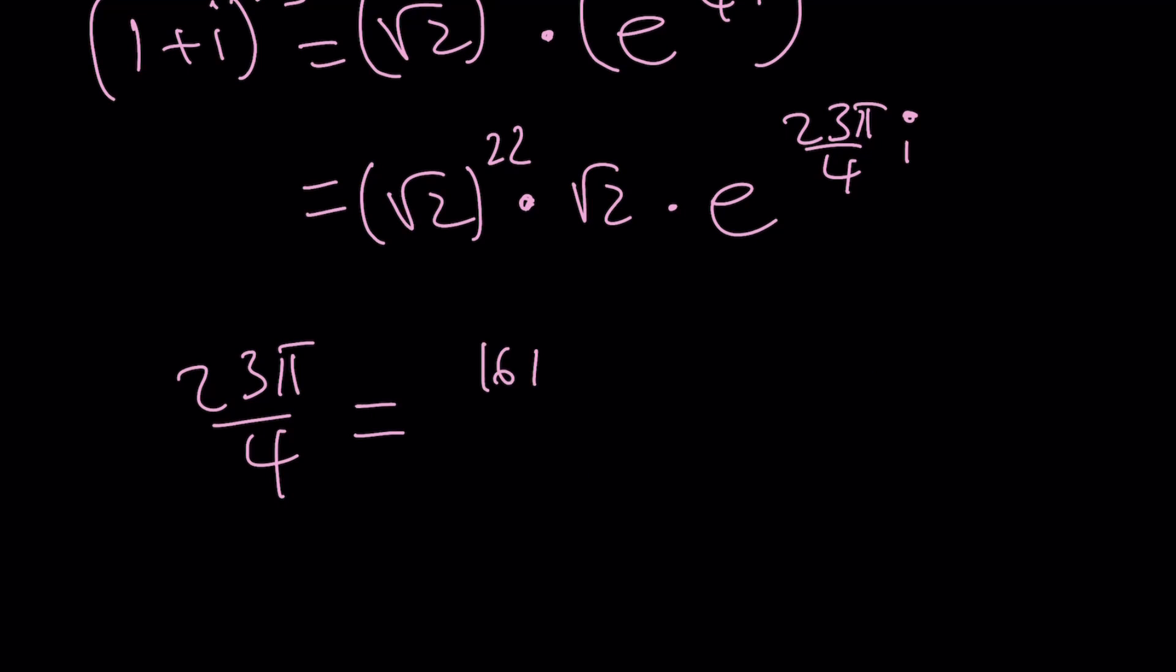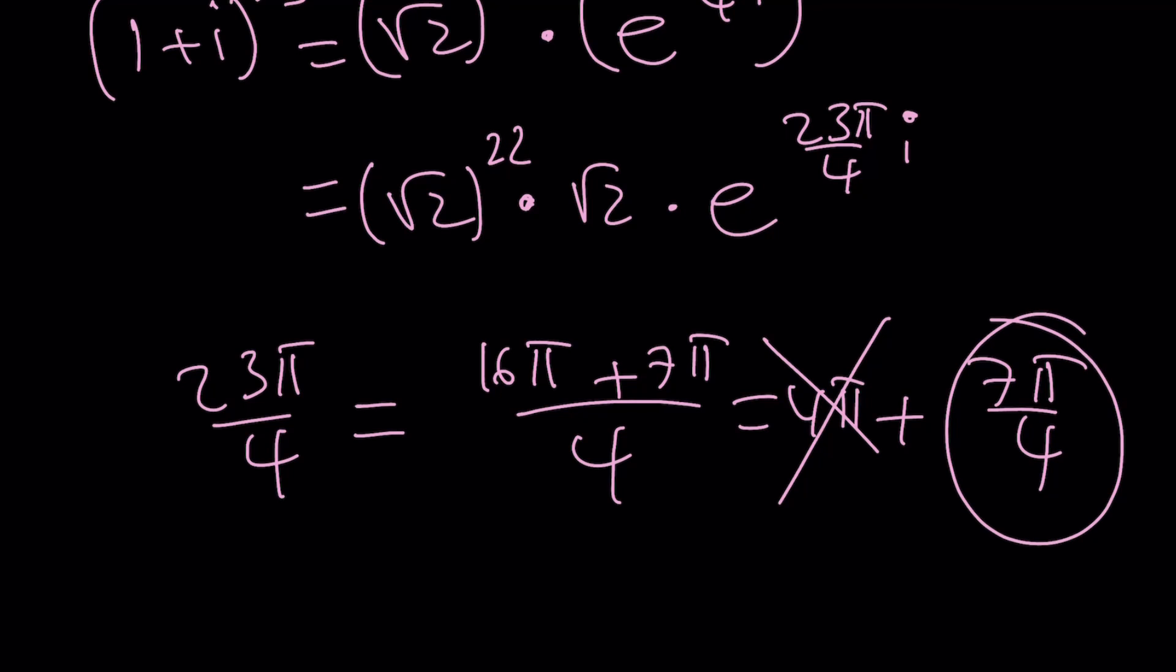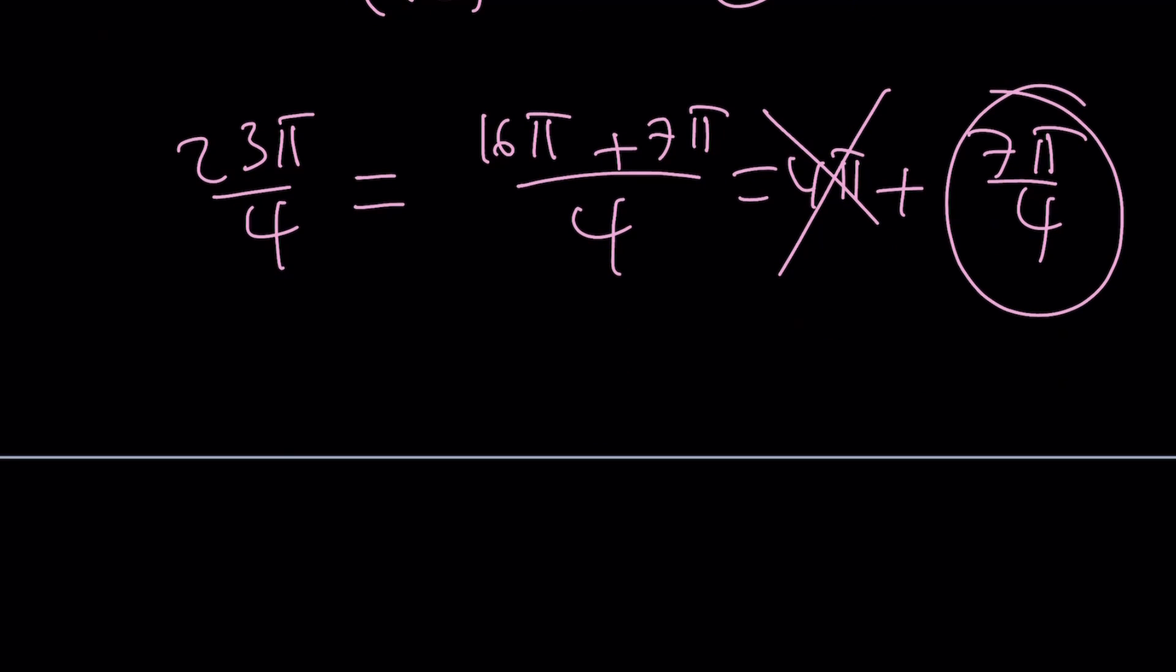And then, this is just going to be e to the power 23 pi over 4 multiplied by i. You're just going to multiply the exponent. But 23 pi over 4 is way greater than 2 pi, so let's go ahead and simplify this. I can write it as 4 pi plus 7 pi over 4. But 4 pi is equivalent to 0 radians, so I can just deal with 7 pi over 4.